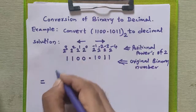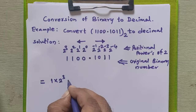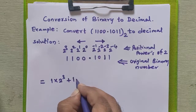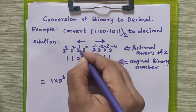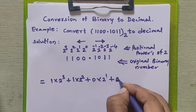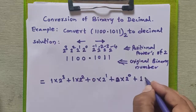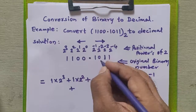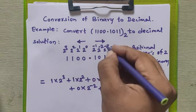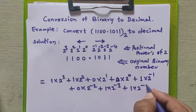So we write: 1 × 2³ + 1 × 2² + 0 × 2¹ + 0 × 2⁰ + 1 × 2⁻¹ + 0 × 2⁻² + 1 × 2⁻³ + 1 × 2⁻⁴.